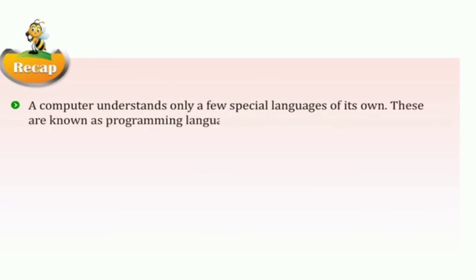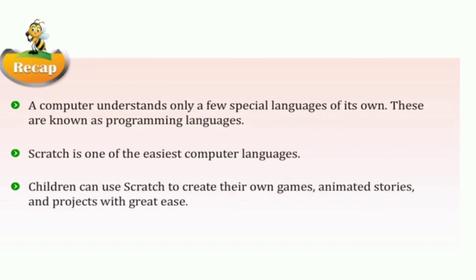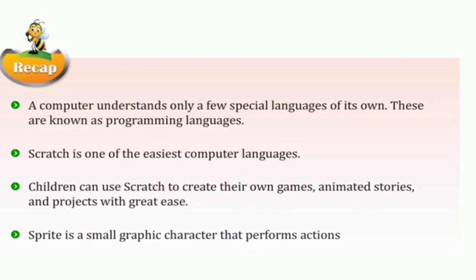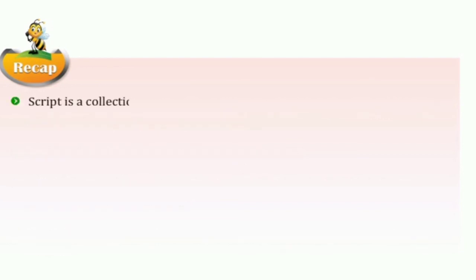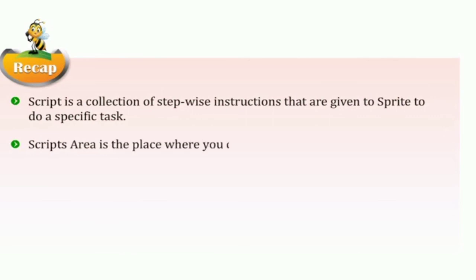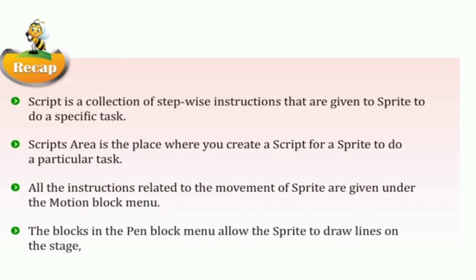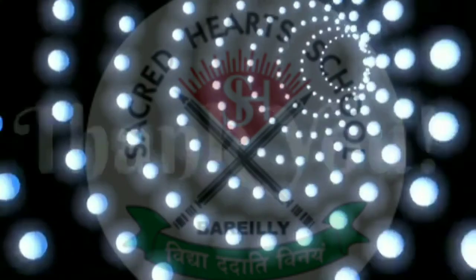Now we have completed the chapter. Here are the recap points: A computer understands only a few special languages of its own, known as programming languages. Scratch is one of the easiest computer languages — children can use Scratch to create their own games, animated stories, and projects. Sprite is a small graphic character that performs actions in a Scratch window. Script is a collection of stepwise instructions given to a Sprite to do a specific task. The scripts area is where you create a script for a Sprite. All instructions related to movement are under the motion block menu, and the pen block menu allows the Sprite to draw lines, and change color and thickness on the stage.